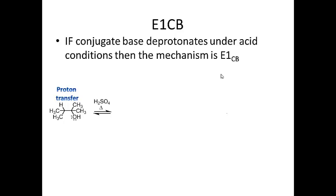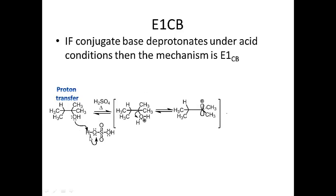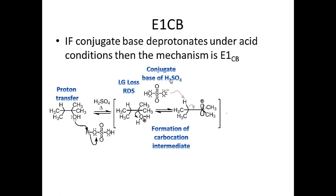There's another type of E1 elimination called E1cb. In this mechanism, the conjugate base of the acid comes in and deprotonates the intermediate to give the alkene product. The first step is proton transfer: the alcohol deprotonates sulfuric acid, giving the conjugate base. Then the leaving group leaves — that's the rate-determining step — forming the carbocation intermediate. The carbocation intermediate is then deprotonated by the conjugate base of sulfuric acid. When this proton transfer happens, the pair of electrons comes in to make the pi bond, giving the alkene plus water plus reformed sulfuric acid.